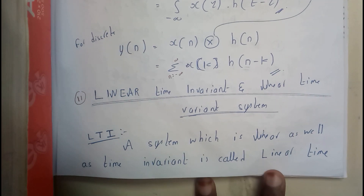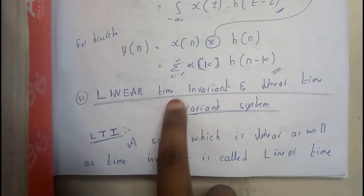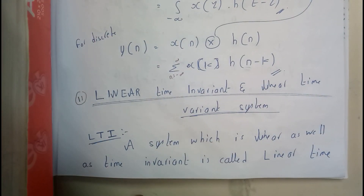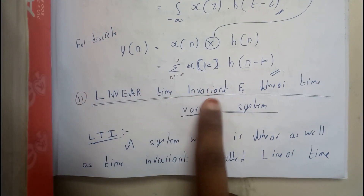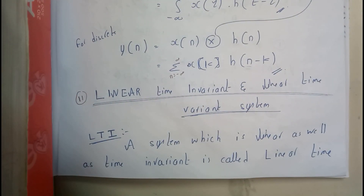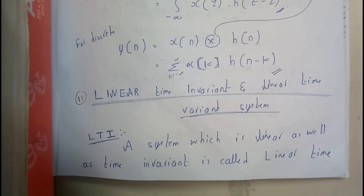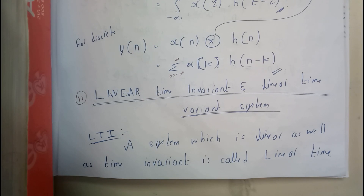Hello guys, we are back with our next tutorial. In this tutorial, let's see all about linear time invariant and linear time variant. If you observe the words clearly, there is linear time invariant and linear time variant. Any system which follows linearity and time invariant is an LTI system. If it follows linearity and is time variant, then it is called LTV.